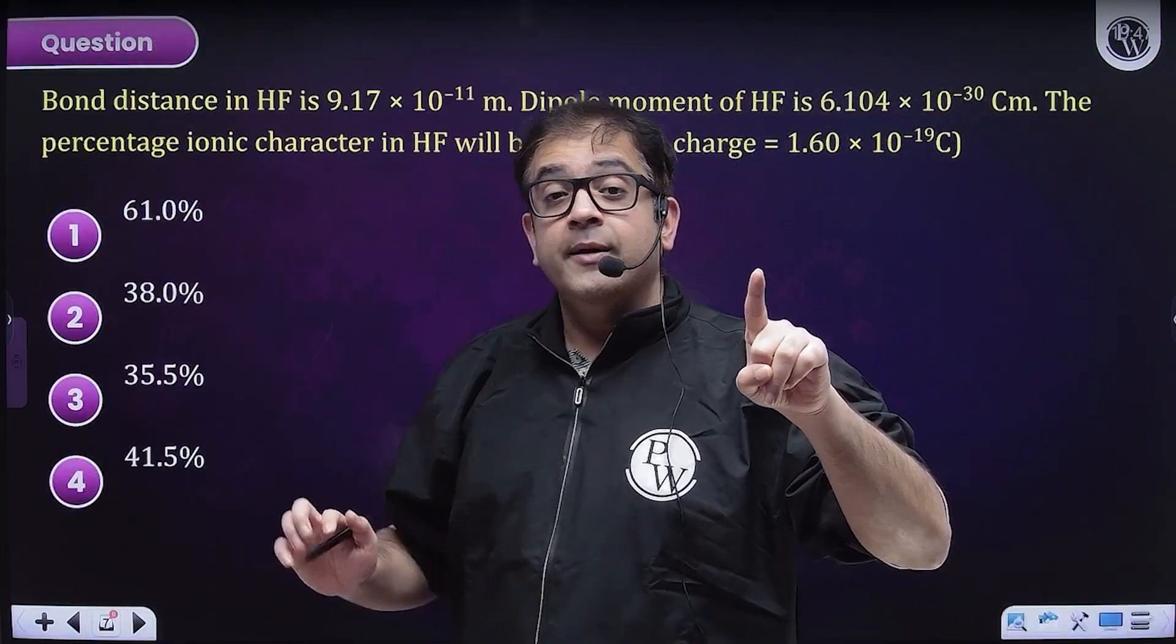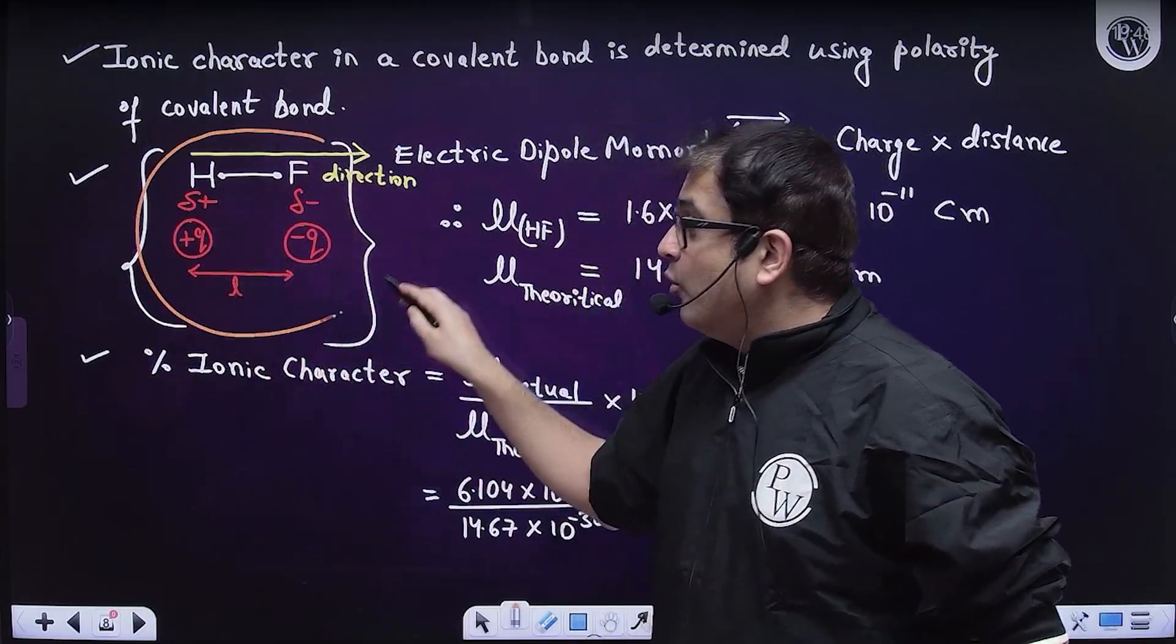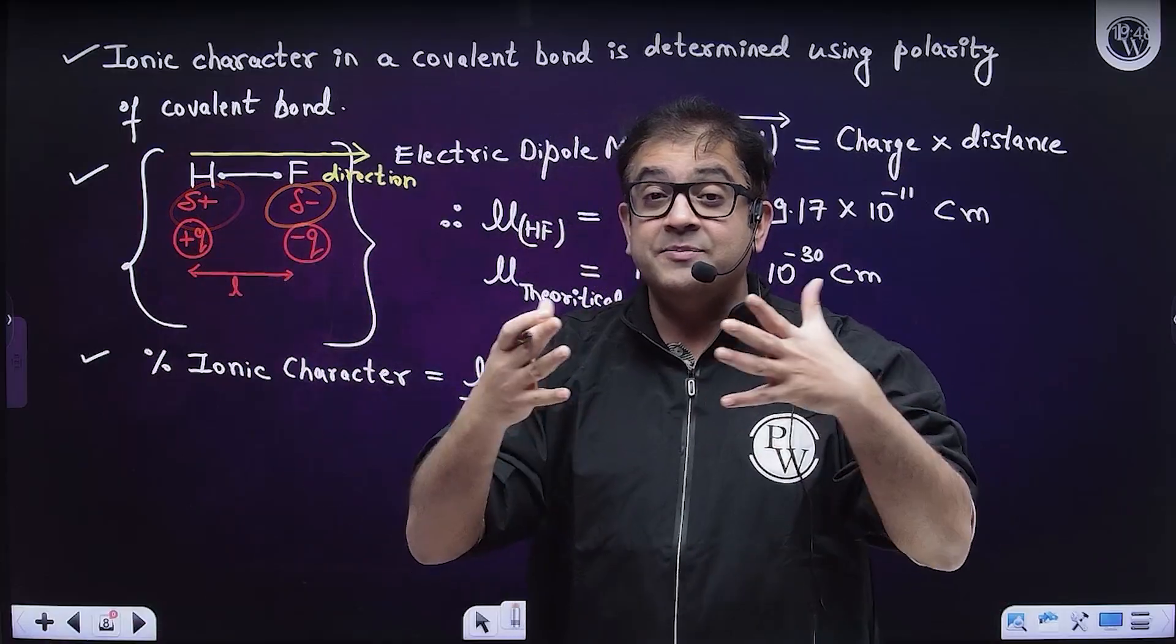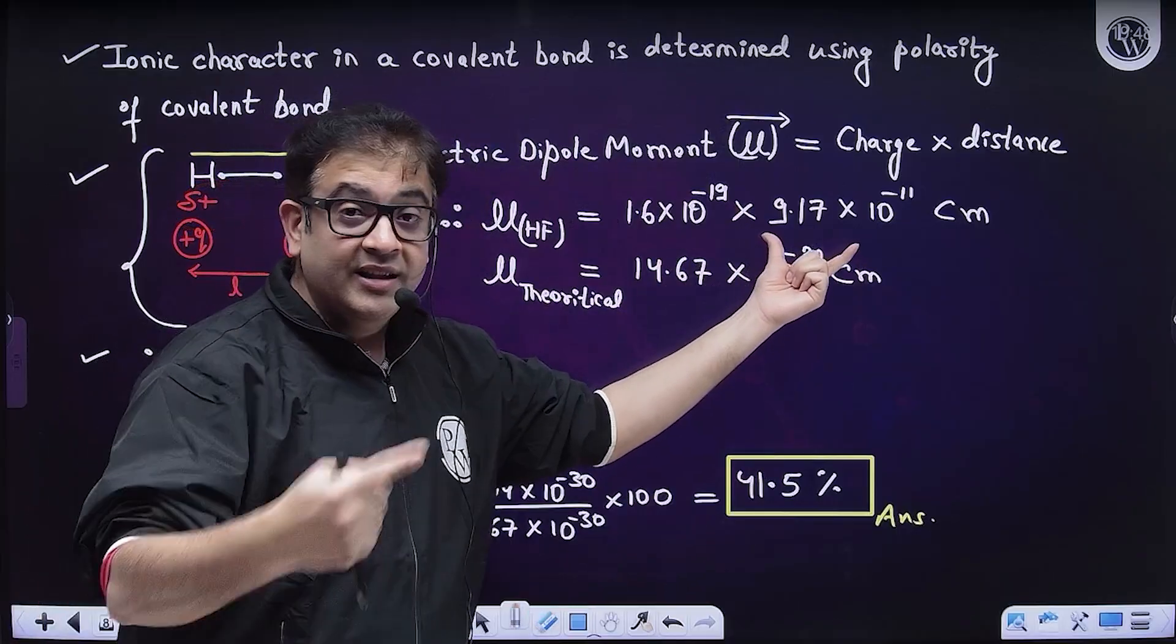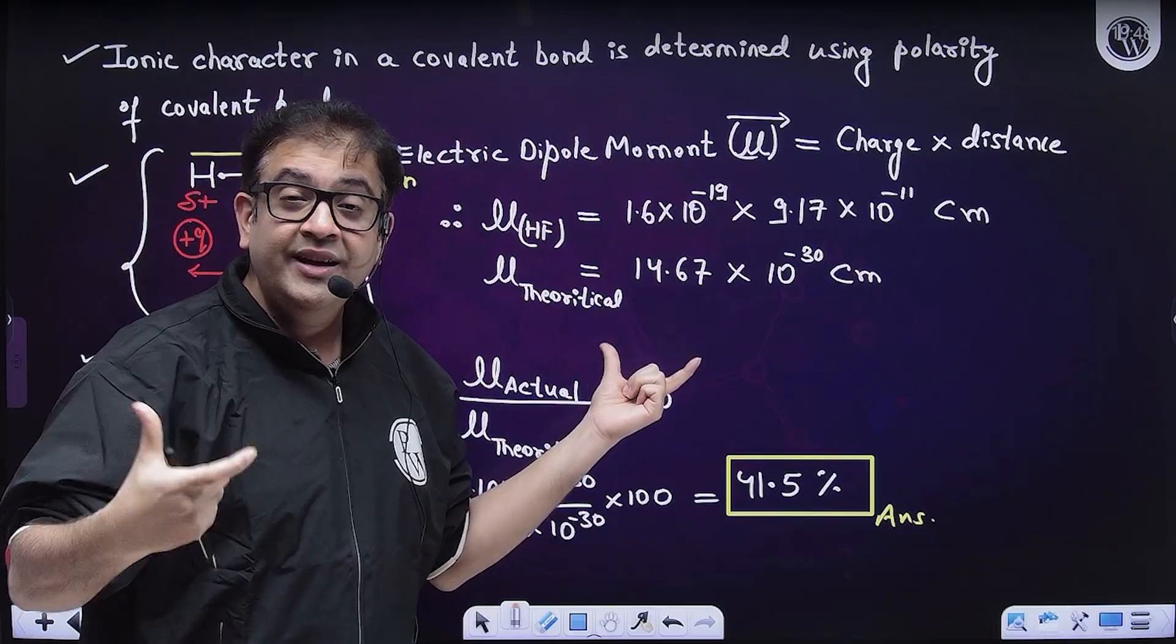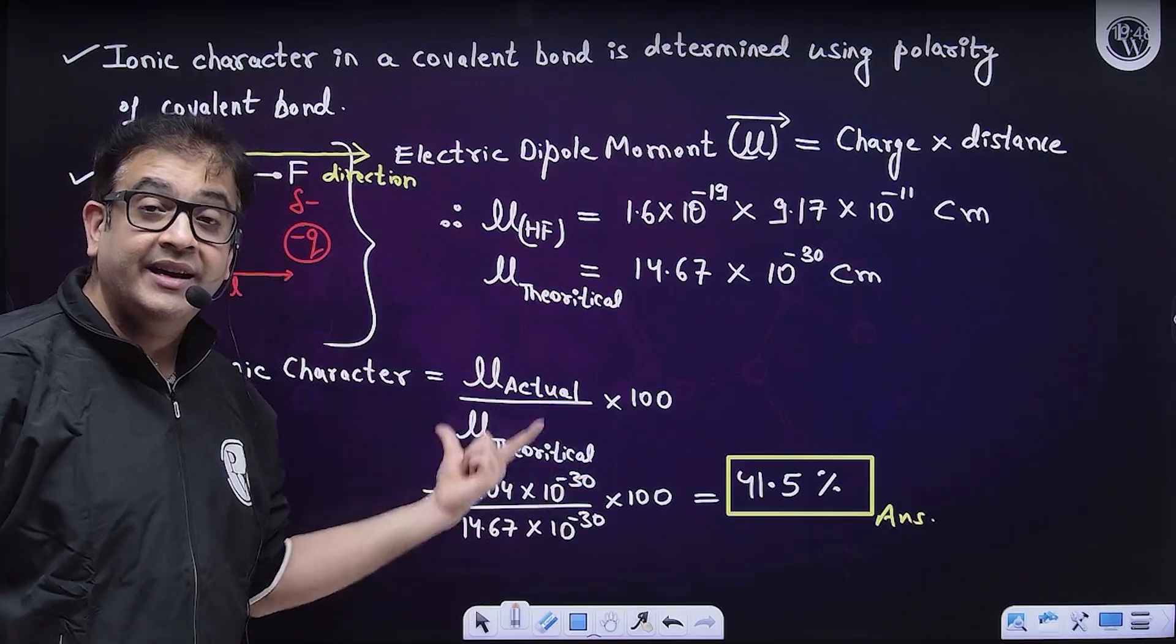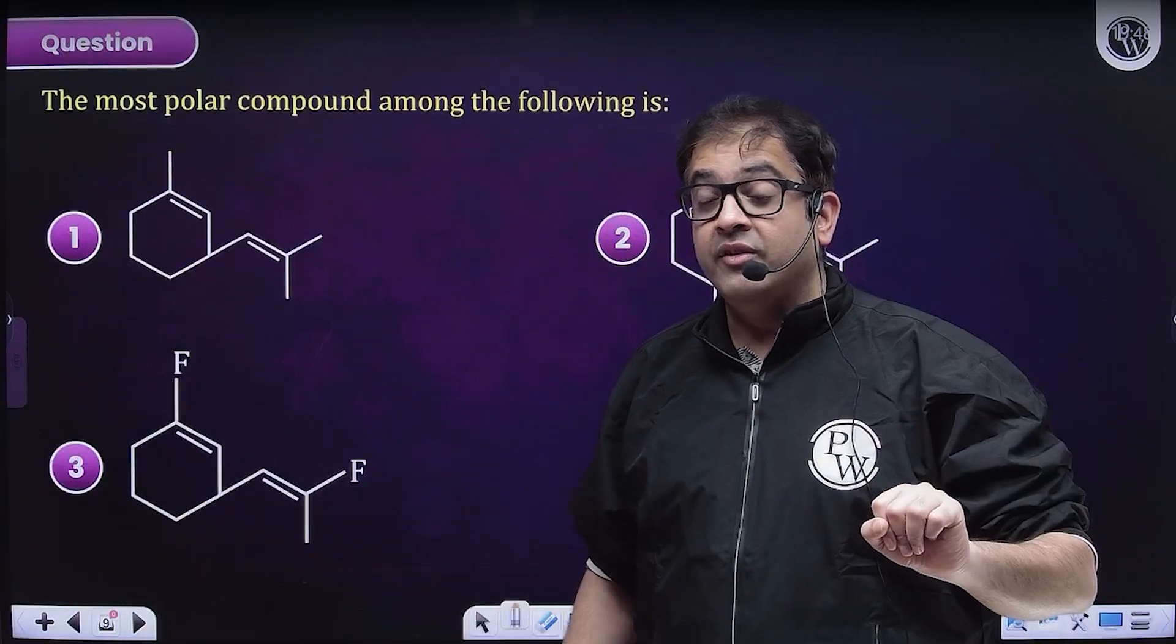Now, if you want to check ionic nature in a covalent molecule, then you have to check its dipole moment. Electric dipole moment is calculated by the formula charge into distance between charges. For HF, charge is partial delta plus and delta minus, and distance between charges is bond length. This dipole moment we have calculated through theory is a theoretical value. Take the ratio with actual dipole moment, multiply by 100 and it will give you the percentage ionic nature.